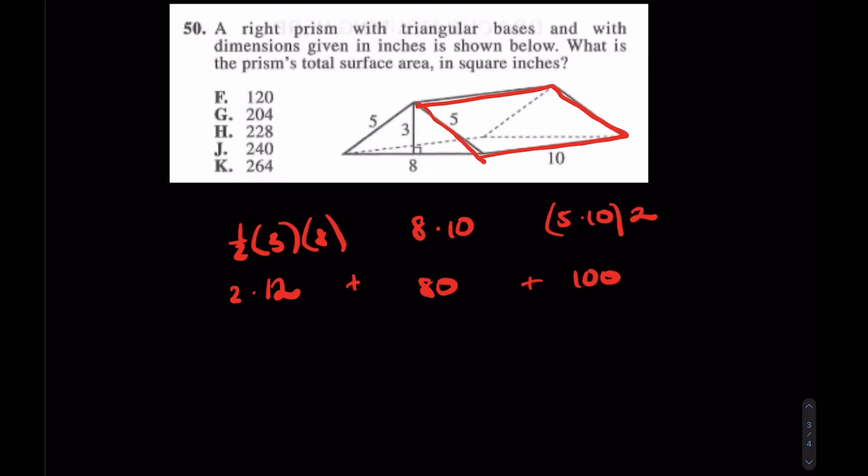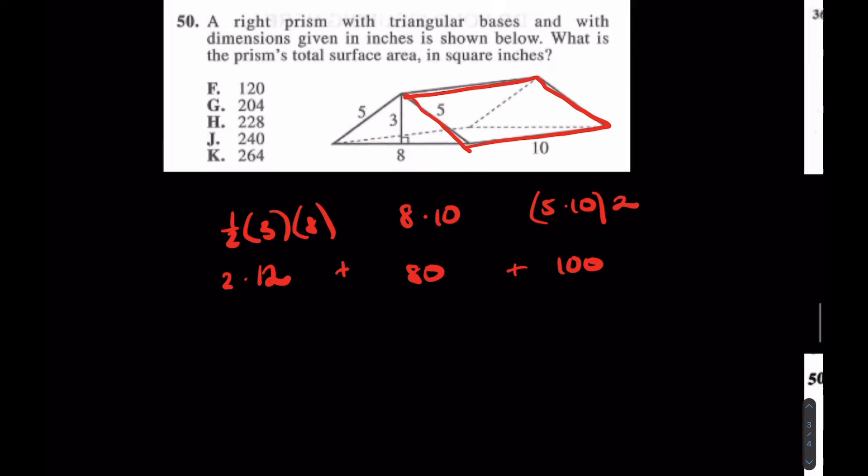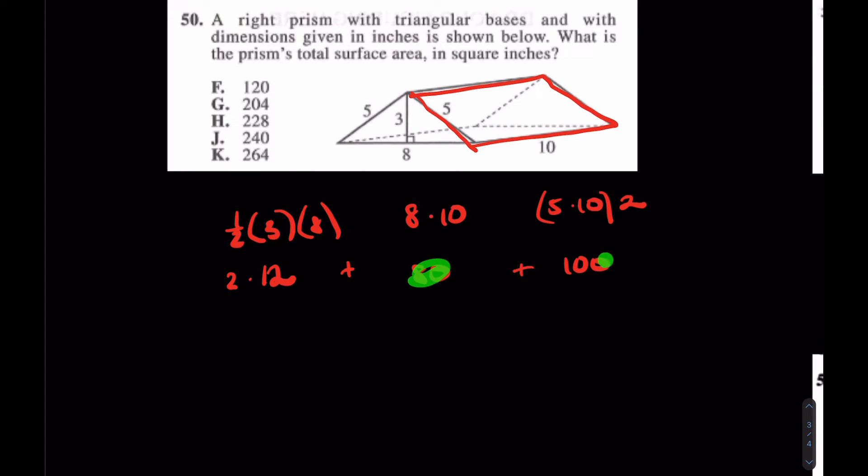At the end of the day, how would you calculate this? Just put this in your calculator, do it by hand. 80 and 100 is 180, plus 24 gets me to 204. I really like the answer of G. Hopefully that helps with surface area.